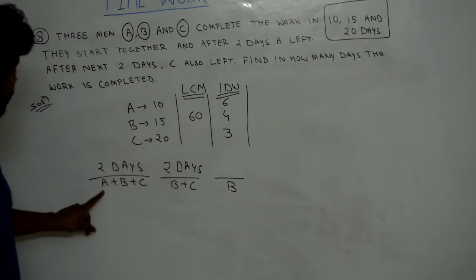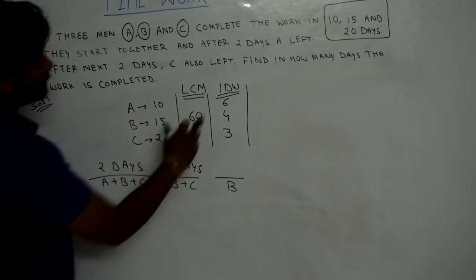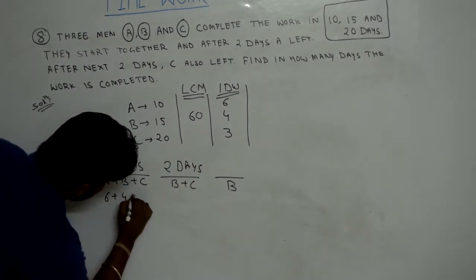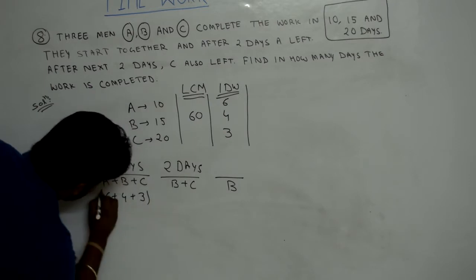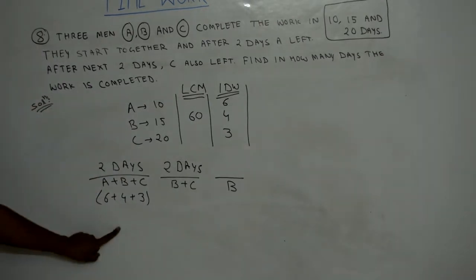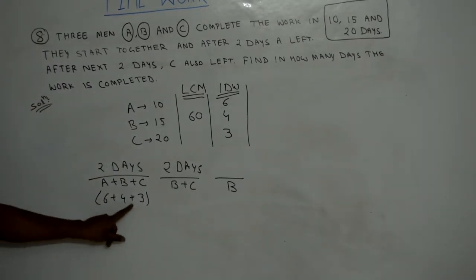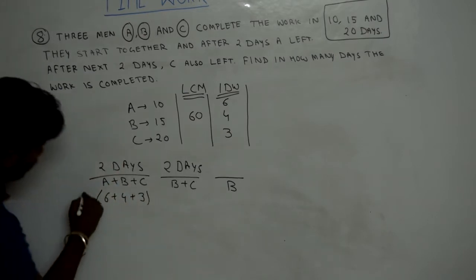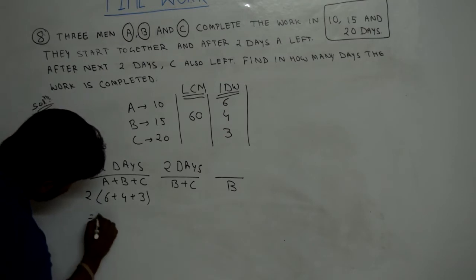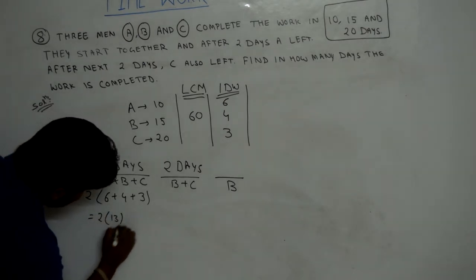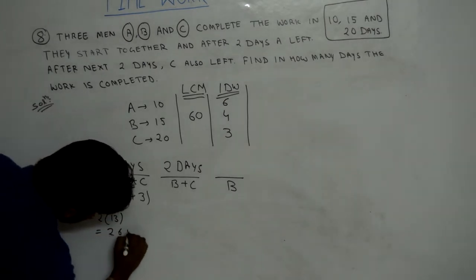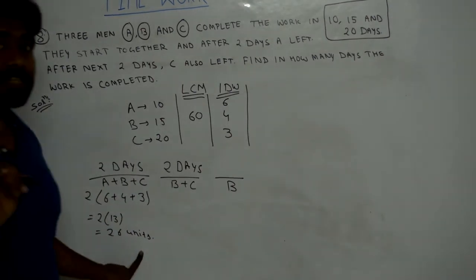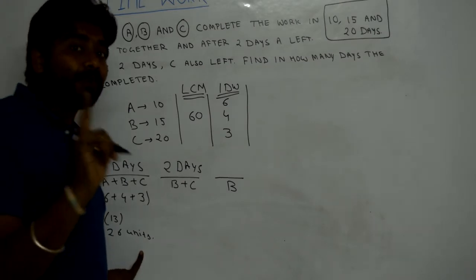One-day work of A plus B plus C is 6 plus 4 plus 3, that is 13 units. A, B and C worked for 2 days, so 2 into 13 equals 26 units of work was completed in the first 2 days.